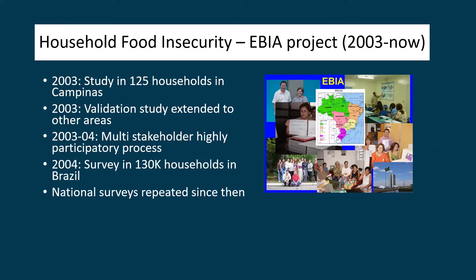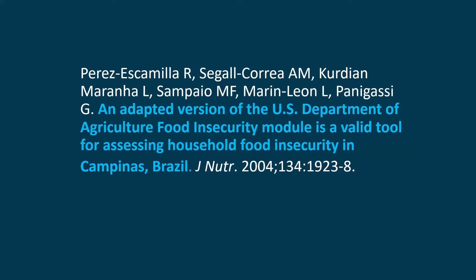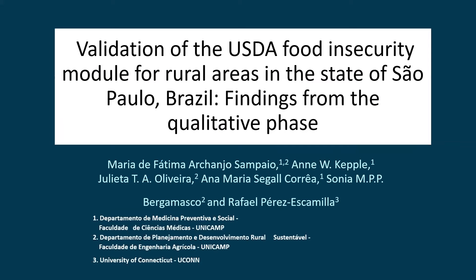Since then, the Brazilian food insecurity scale EVIA has been included in both household expenditure surveys as well as demographic and health surveys repeatedly since 2004, and it has become a major research and policy instrument to advance food security in the country. If you want to read about the first validation article in Campinas, or about the validation in one of the rural areas in Sao Paulo, Brazil, references are available.